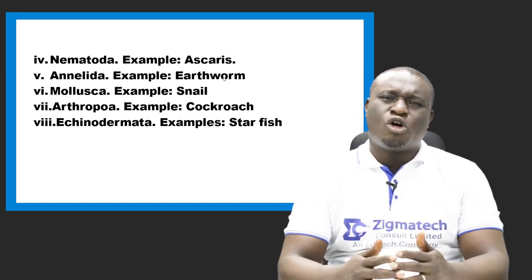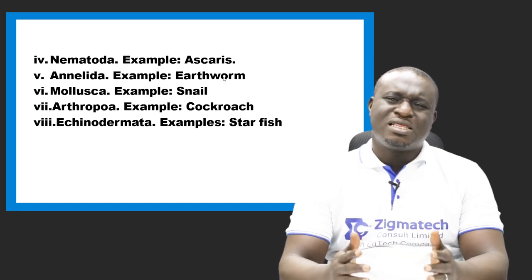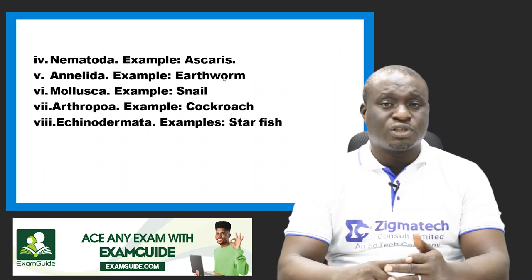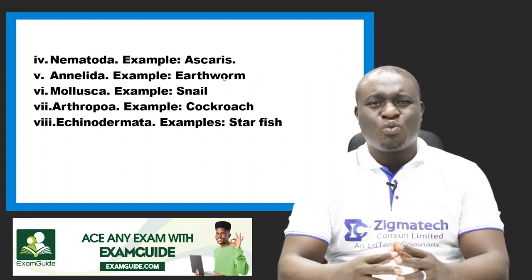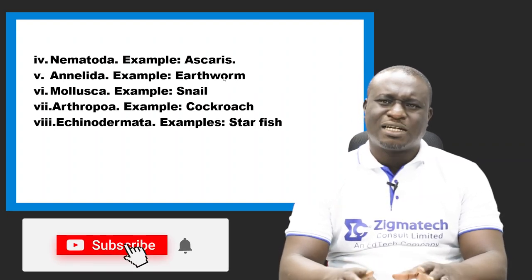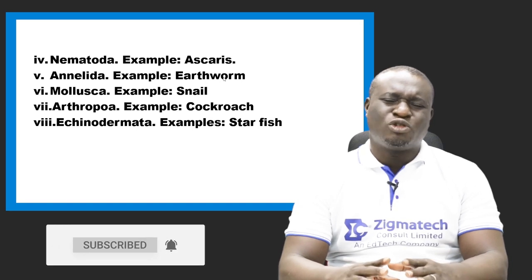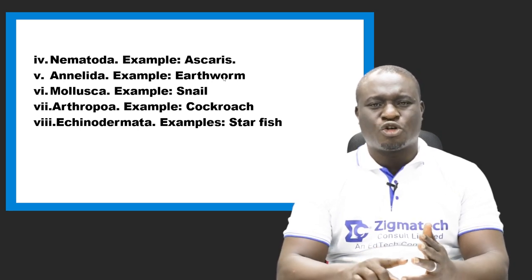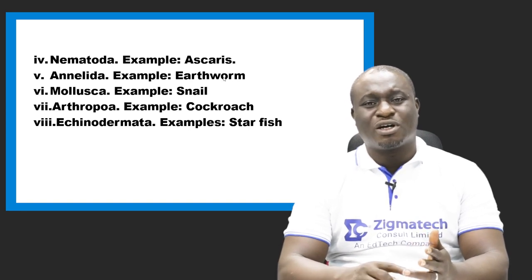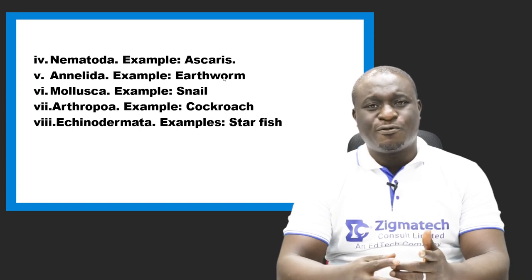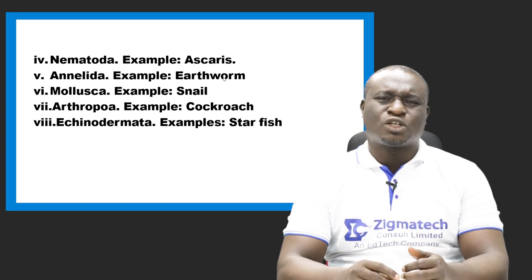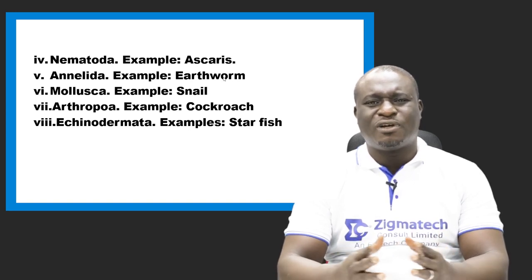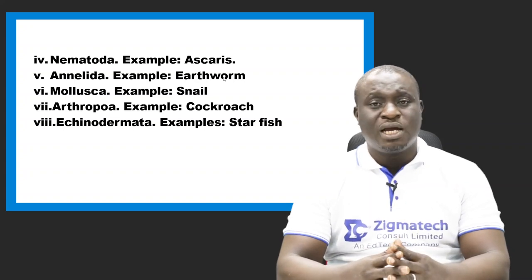Number six, we have Mollusca. Under this category, examples include the snail, slugs, and octopus. We also have Arthropoda, which is divided into four major classes. These include Crustaceans — examples: crabs, shrimps, and prawns — and Insecta, which includes the cockroach, termites, housefly, butterfly, and grasshoppers.